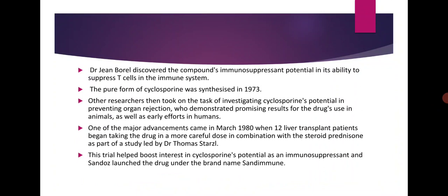The pure form of Cyclosporine was synthesized in 1973. Other researchers then took on the task of investigating Cyclosporine's potential in preventing organ rejection, demonstrating promising results in animals as well as early efforts in humans. One major advancement came in March 1980 when 12 liver transplant patients began taking the drug in combination with the steroid prednisone in a study led by Dr. Thomas Stahls. This trial boosted interest in Cyclosporine, and Sandoz launched its first drug under the brand name Sandimmune.